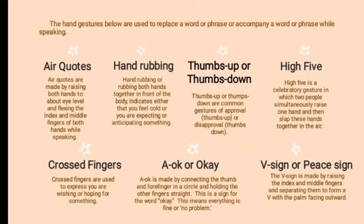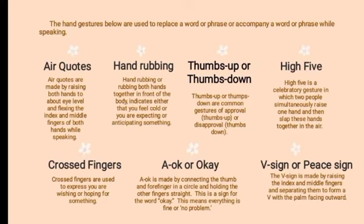There are also specific American hand gestures used to replace or accompany words while speaking. First, air quotes: made by raising both hands to about chest level and flexing the index and middle fingers of both hands while speaking. This means you are quoting someone or something. Second, hand wrapping: wrapping or rubbing both hands together in front of the body indicates either that you feel cold or that you are expecting or anticipating something.